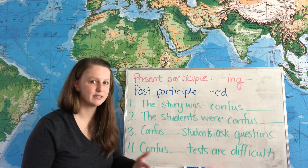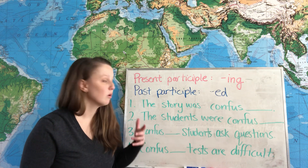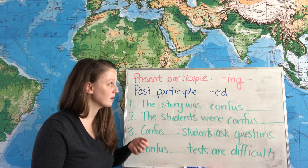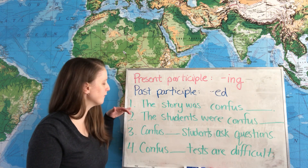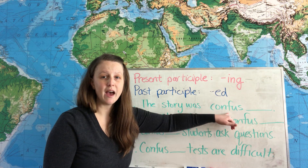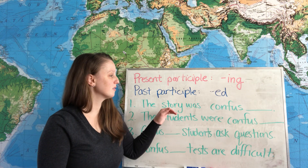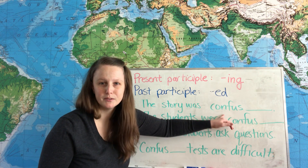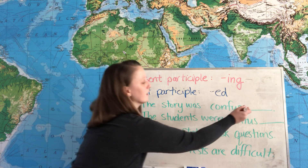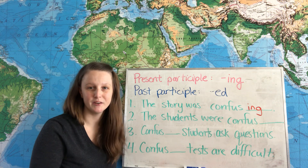Let's look at some example sentences. All of these will use the words confusing and confused. Our first sentence is: 'The story was ___.' We have to think — is this story feeling confused, or is this story confusing, making the readers feel confused? The answer is: the story was confusing, because it caused the readers to feel confused.